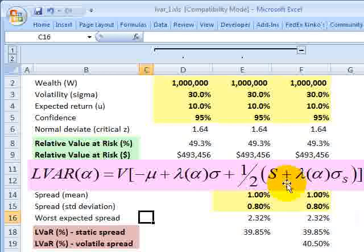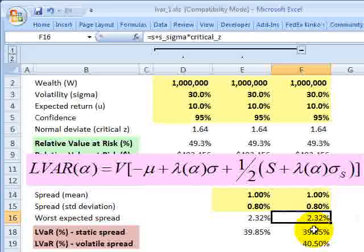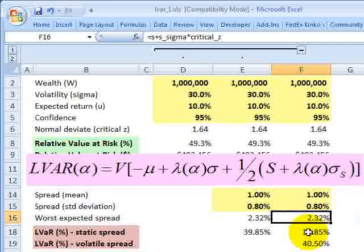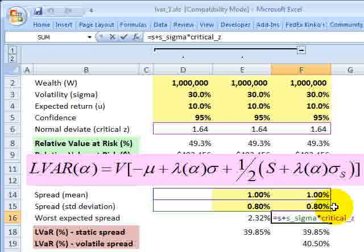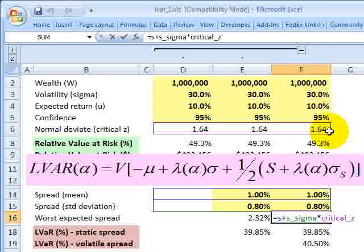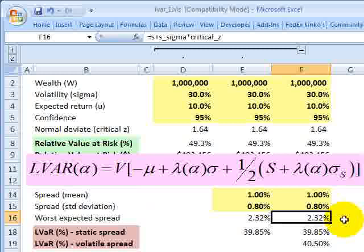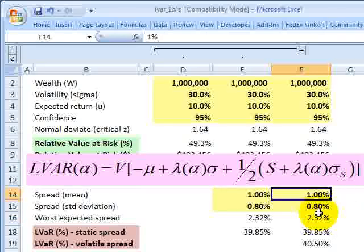And so this gives us the worst expected spread, which is right here. It's 2.32 because it's our 1% mean spread plus the standard deviation of our spread, 0.8, multiplied by the normal deviate. And so what we get here is 2.32 is the worst expected spread with 95% confidence. See the difference? In the basic approach or static approach, we use one-half the mean spread. In a more dynamic approach, we use one-half the worst expected spread based on some confidence level.